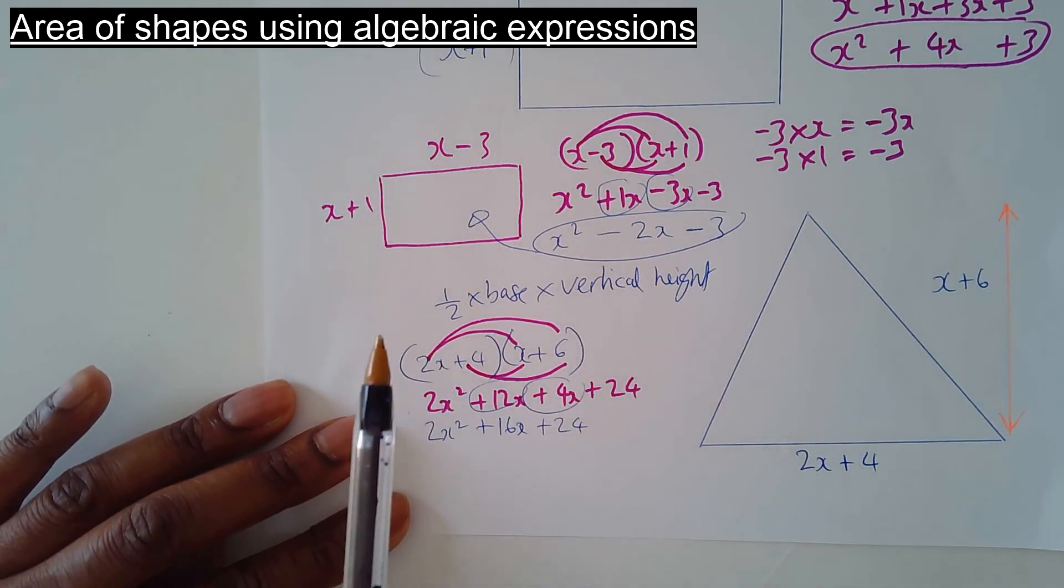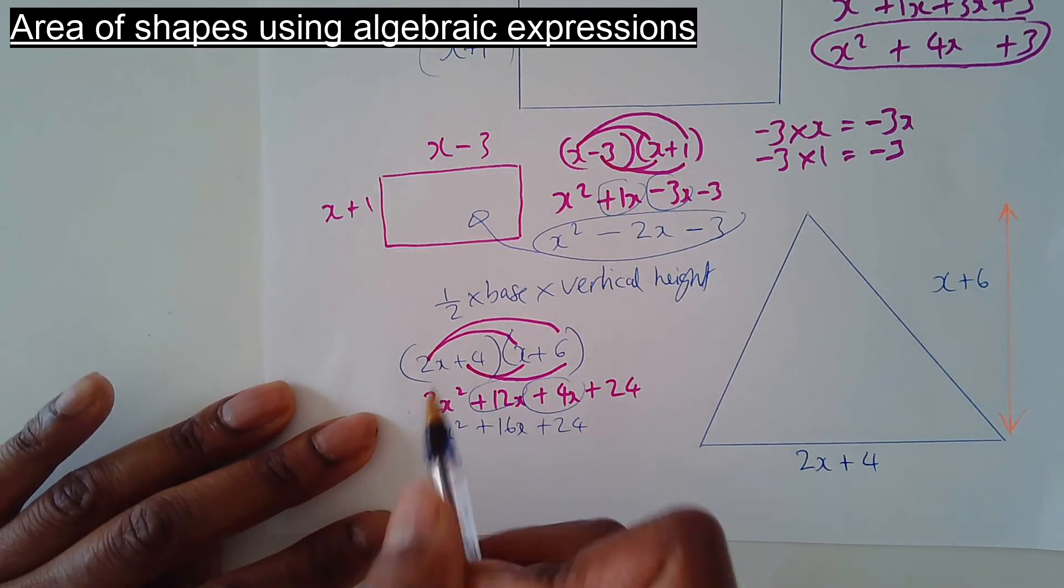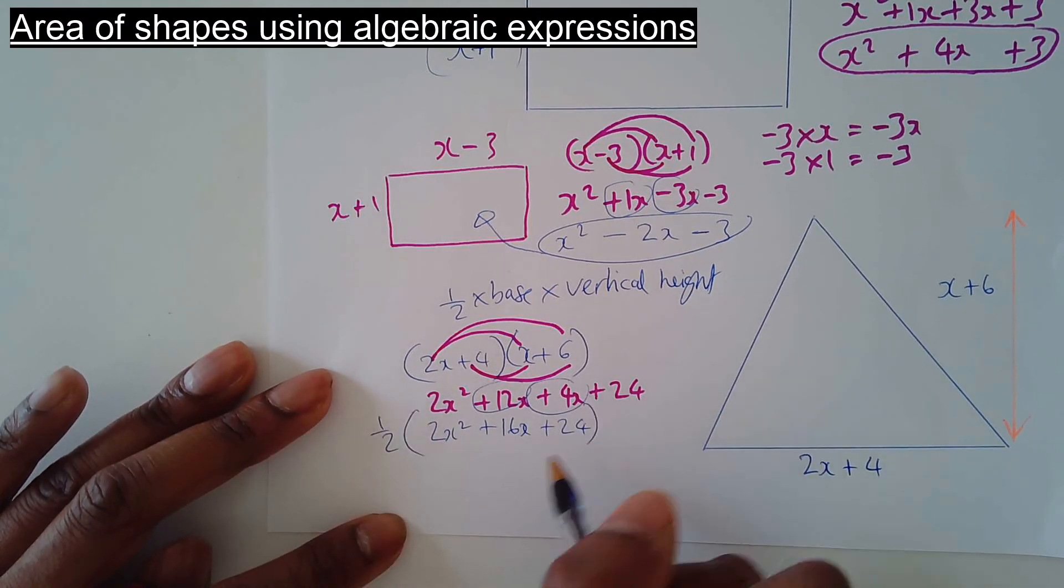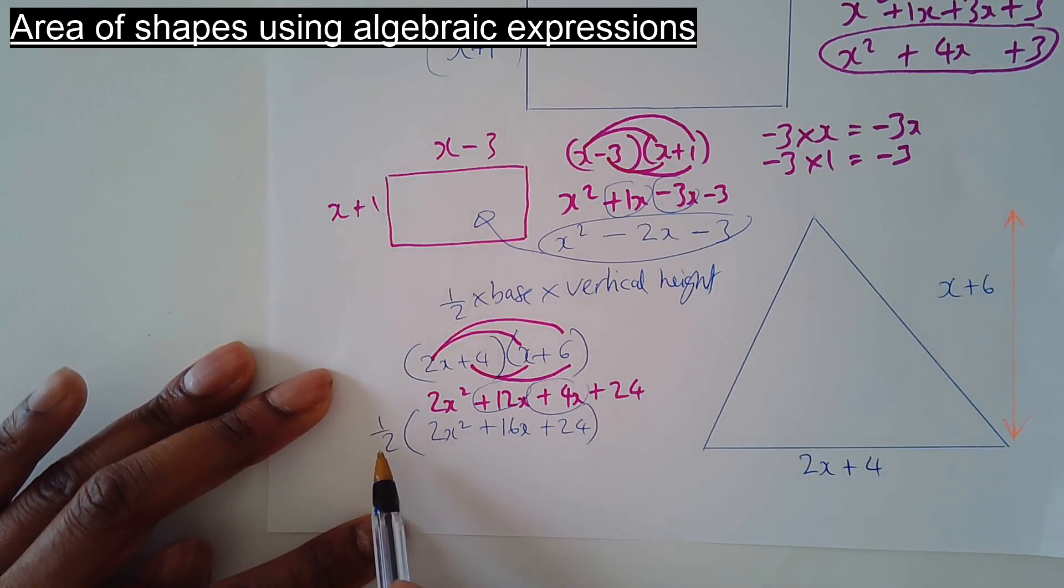And now you need to half this. So now half of that, half of all of that. That's going to be half of 2x squared. Half times 2 is 1. That's 1x squared. You don't need to put the 1 there. You can just leave it as x squared.